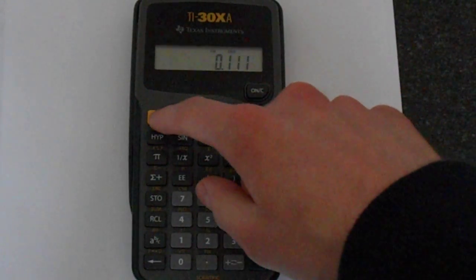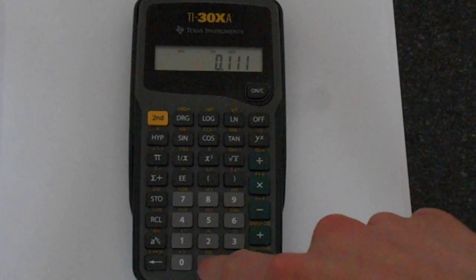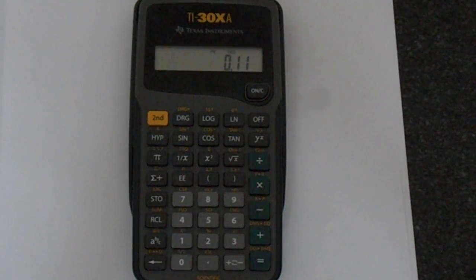Just to show you that again: second function, then the point to access the fix function, and then press 2. That gives us 2 decimal places.